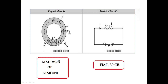Here we have an electromagnet where the magnetic field is created by applying current through the coil. The magnetomotive force (MMF) is based on two parameters: the number of turns N and the amount of current I supplied through the coil, so MMF = N×I. Another formula for MMF is φ×S, where φ is the flux and S is the reluctance.